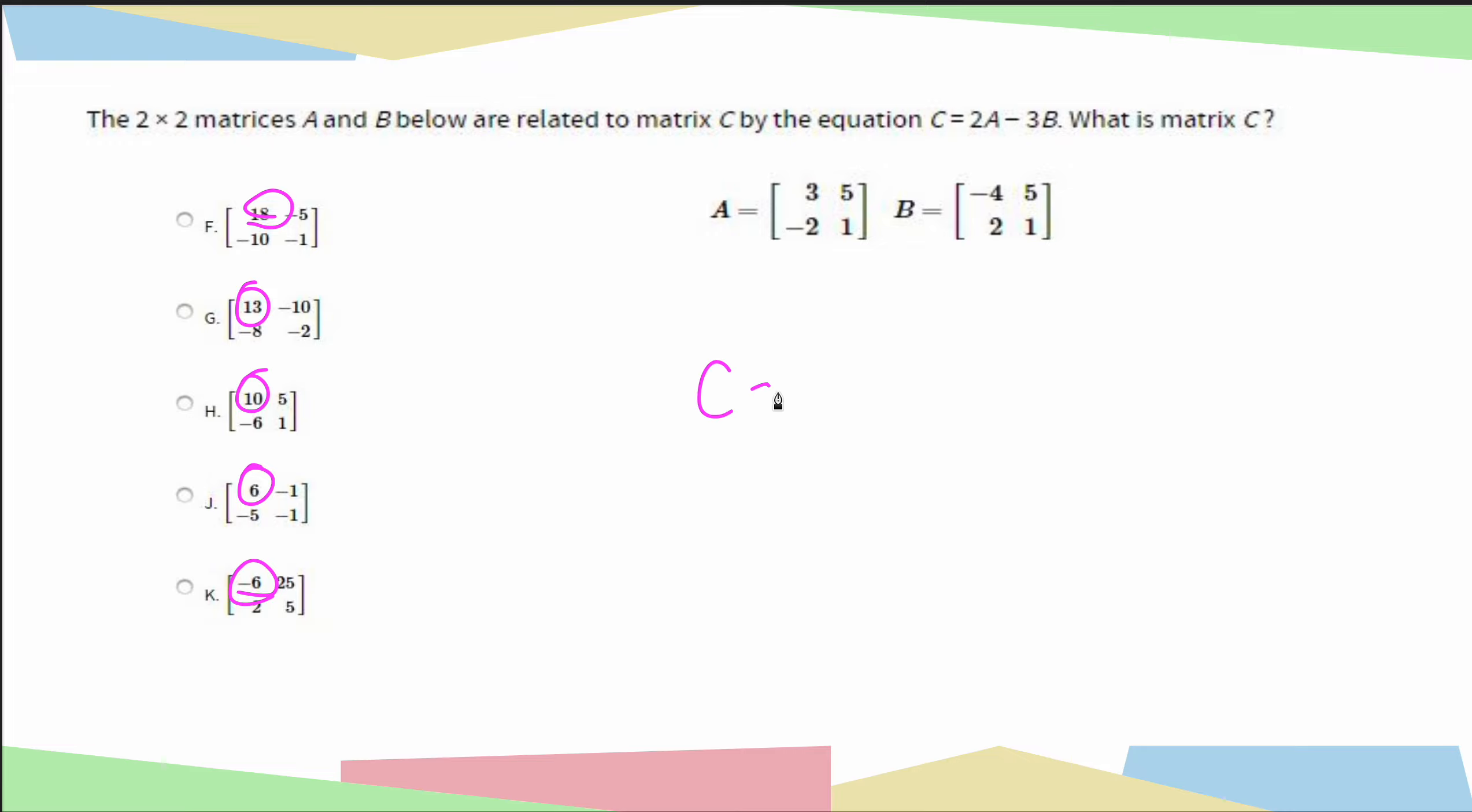So I know in my resultant vector C, this position here, my row 1, column 1 here, is going to be given by 2 times this number, so 2 times 3 is 6, and then I would do minus 3 times this number, so minus 3 times negative 4. Very important to not mess up on your signs when you're doing this. So this is going to give me 6, the 2 times 3.